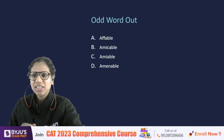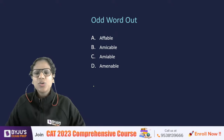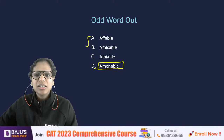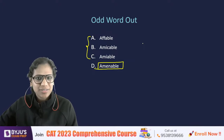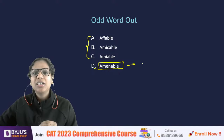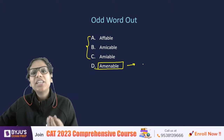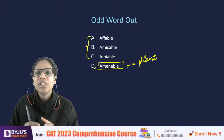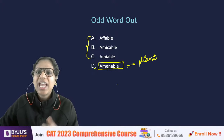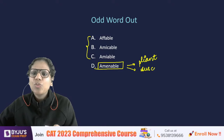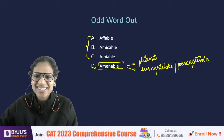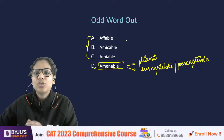The answer is D — amenable. Amiable, affable, and amicable mean something friendly or pleasant. Whereas amenable means somebody who is very susceptible to something, or a very compliant, pliant person — someone who will obey you very easily. So amenable children are very compliant children: they obey you easily, they listen to you, they act as you say. It also means susceptible or vulnerable. That's why A, B, and C belong to the group of friendliness and pleasantness, whereas D does not.